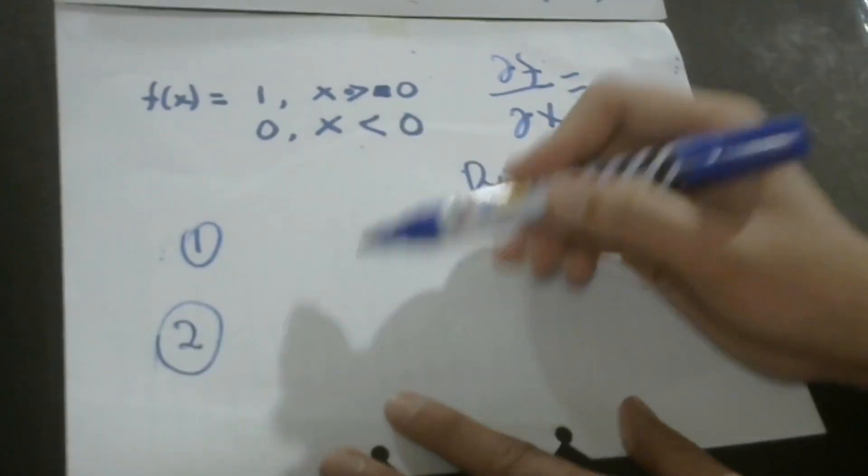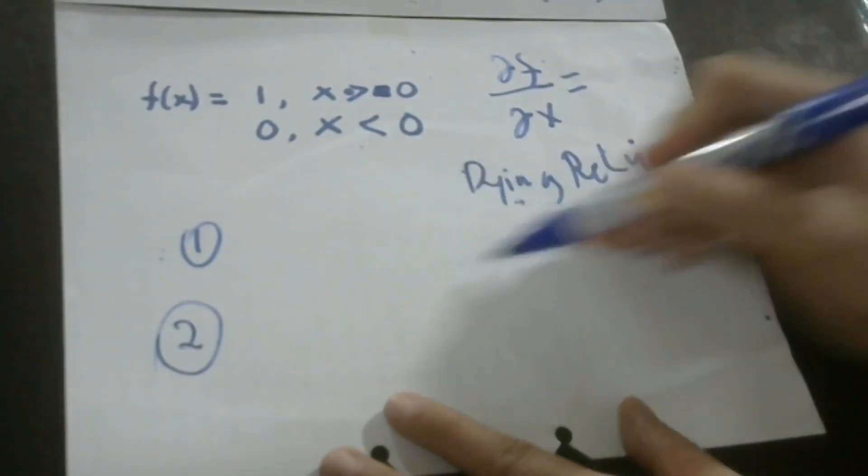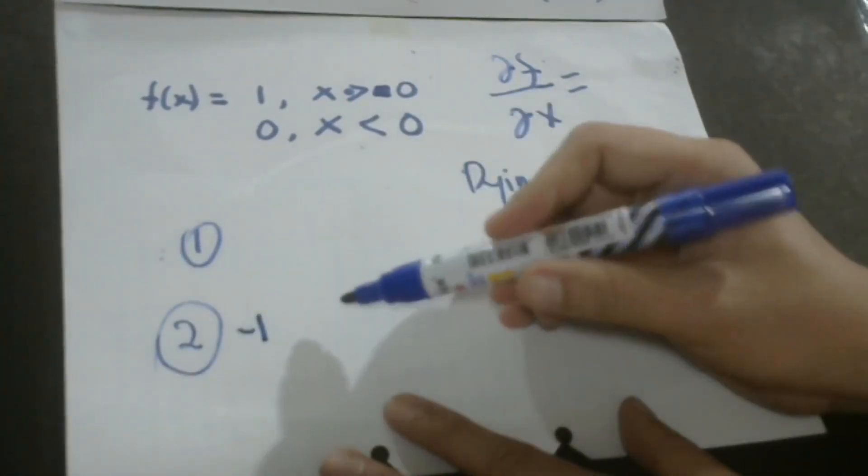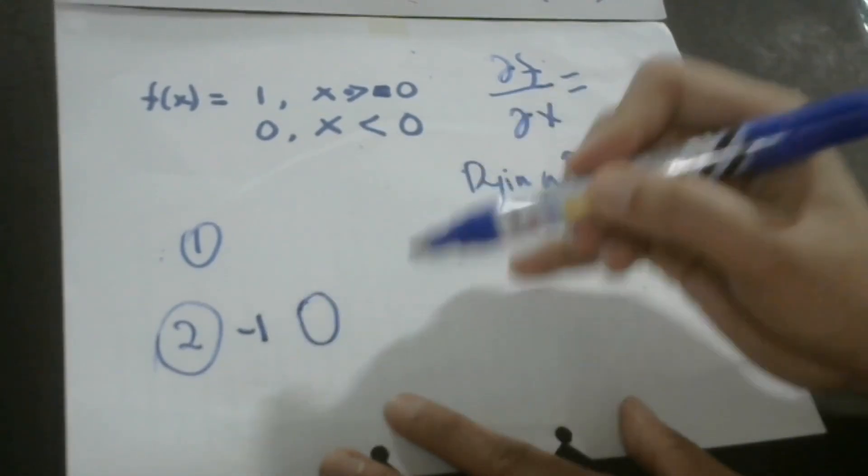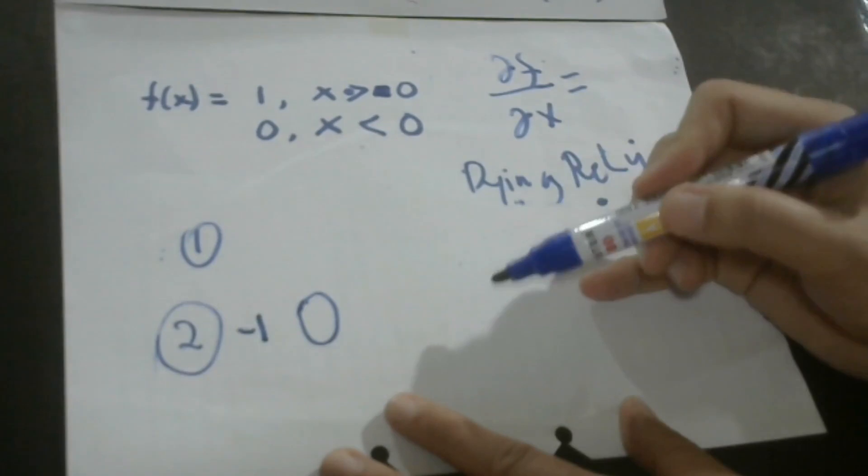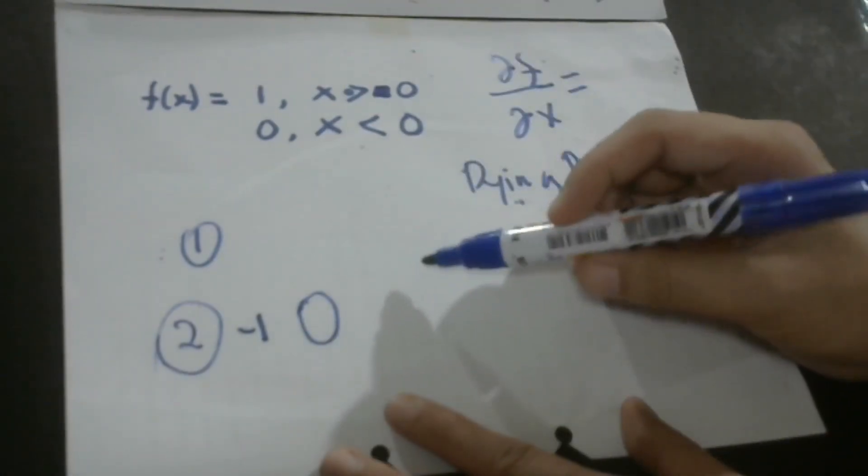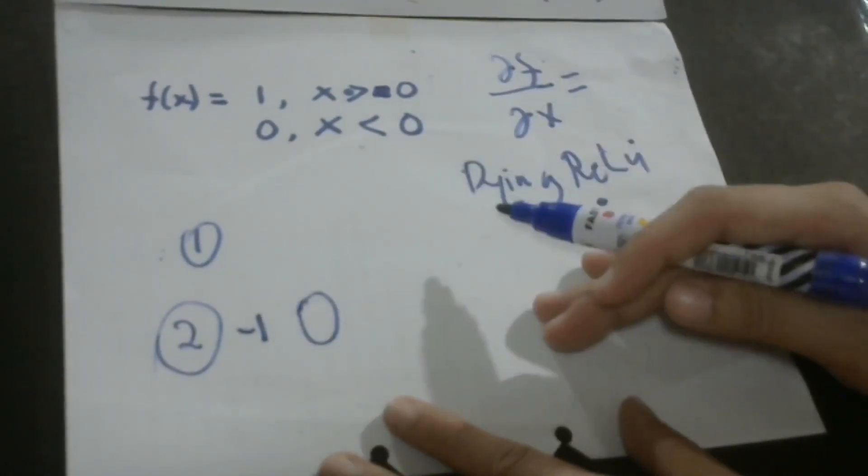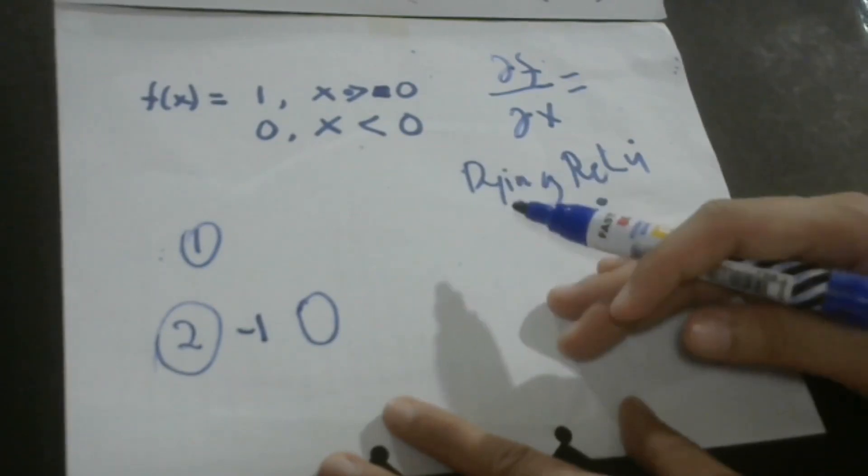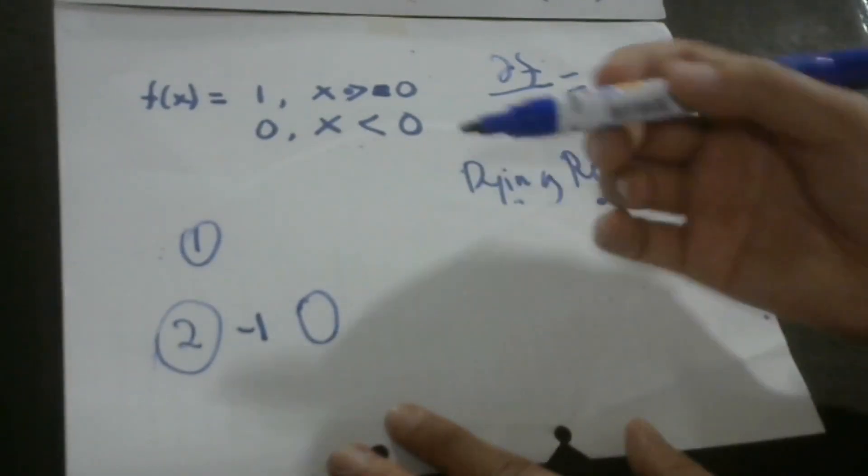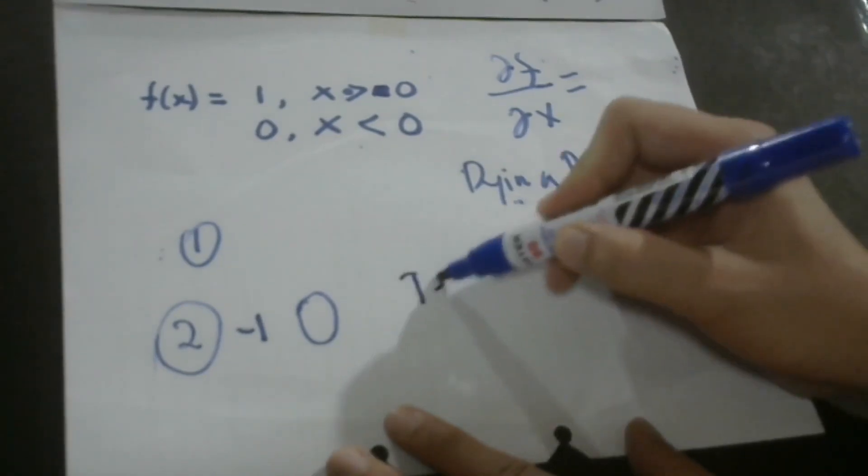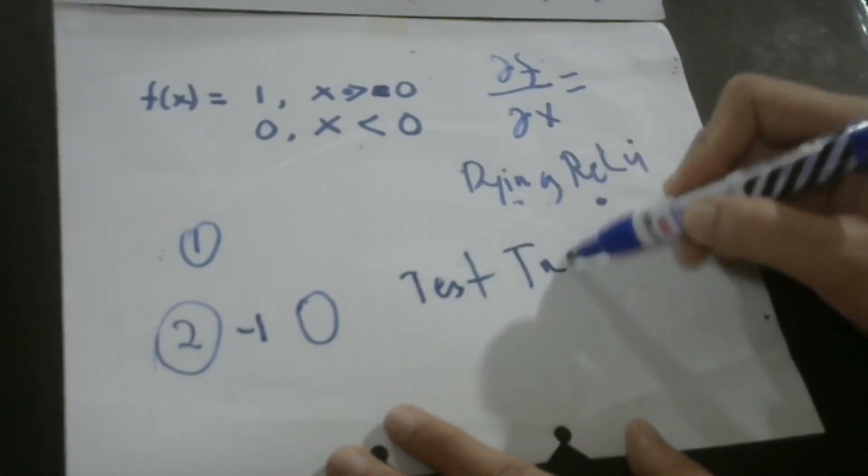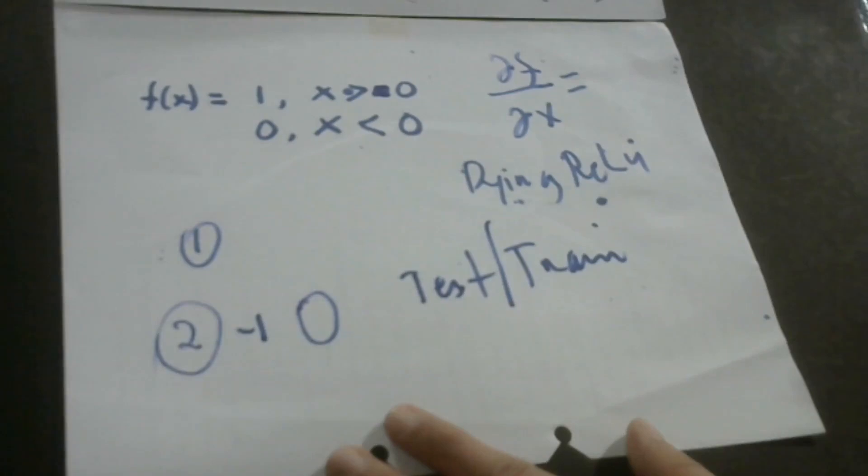And number two would be that when the values that are negative, they are considered zero. They are immediately considered zero. Then that would mean that the ability of our model to fit to a certain data would become decreased. And this happens sometimes, or in most cases, if not in all cases, when we use both the test and train test data.